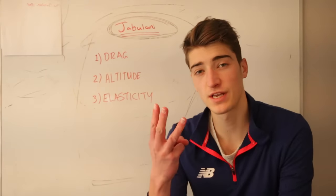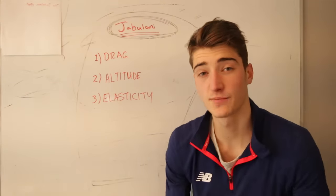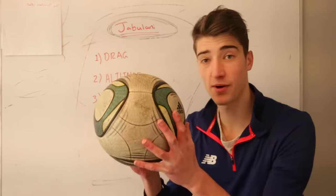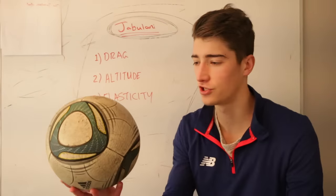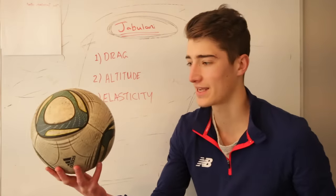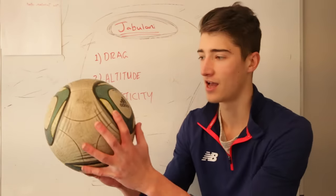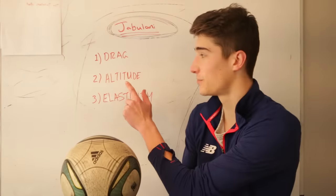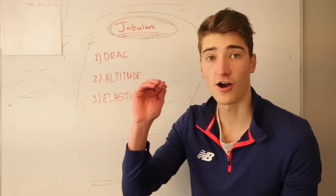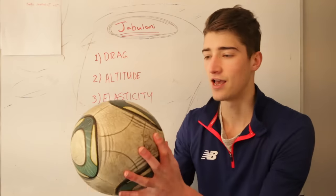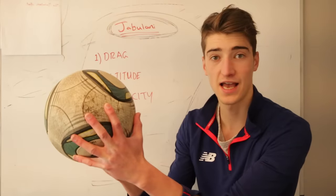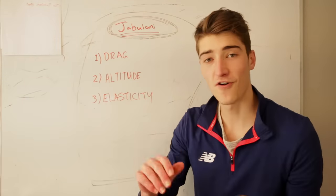I've done a little bit of research and there are three main reasons this ball moves differently. The first one is drag. Because this ball is made from only eight panels, not the usual 32, it's more aerodynamic through the air, so there's less air resistance on it, making it go further and faster. Next up is altitude. Because they were playing in South Africa at a higher altitude, the air was thinner, therefore less air resistance, and the ball moved faster through the air, making it more difficult to control.